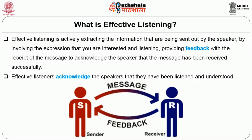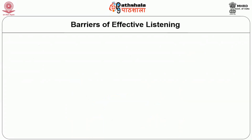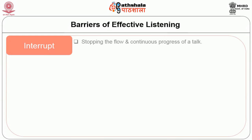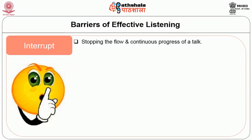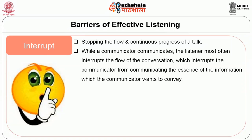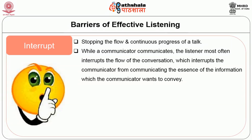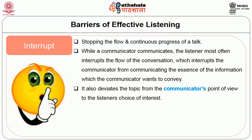Effective listeners acknowledge the speaker that they have been heard and understood. Barriers of effective listening — Interrupt: stopping the flow and continuous progress of a talk. While a communicator communicates, the listener most often interrupts the flow of the conversation, which prevents the communicator from conveying the essence of the information. It also deviates the topic from the communicator's point of view to the listener's choice of interest.